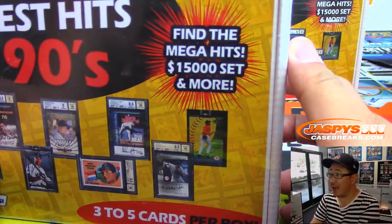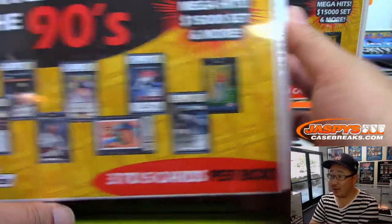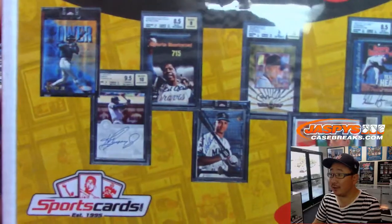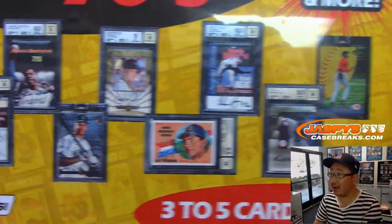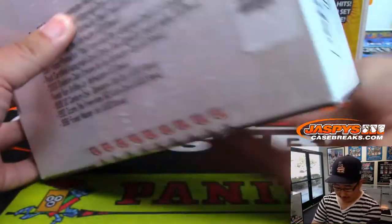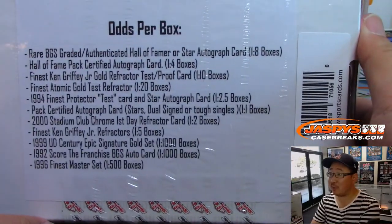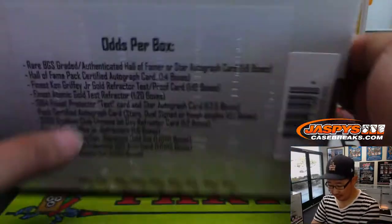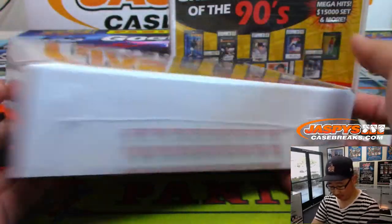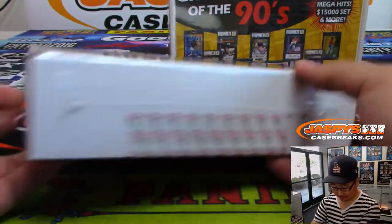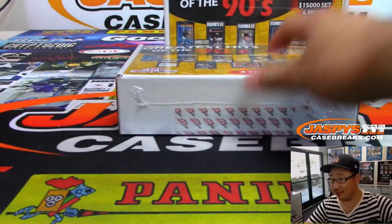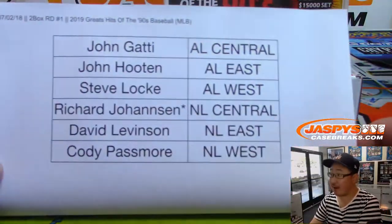So there are some mega hits — three to five cards per box, potentially all this stuff right here. Those are the odds per box right there. That's the company, sportscards.com.